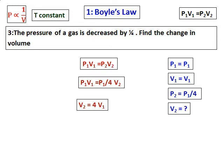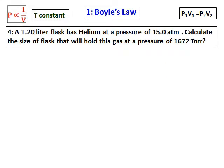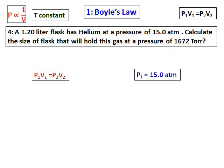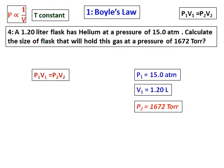Another question: a 1.20-litre flask has helium at a pressure of 15.0 atmospheres. Calculate the size of the flask that will hold this gas at a pressure of 1672 torr. Use P1V1 = P2V2. P1 is 15.0 atmospheres, V1 is 1.20 litres, and P2 is 1672 torr.